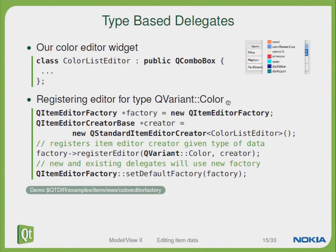Here is sample code on how to create a type-based editor. First we create a factory with new QItemEditorFactory. Then we create a new QStandardItemEditorCreator and register this editor within our factory. We specify QVariantColor so it applies to this specific type. Then we call setDefaultFactory and all cells of type QVariantColor will use this editor.